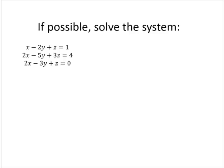If possible, solve the system. We have x minus 2y plus z equals 1, 2x minus 5y plus 3z equals 4, and 2x minus 3y plus z is equal to 0.